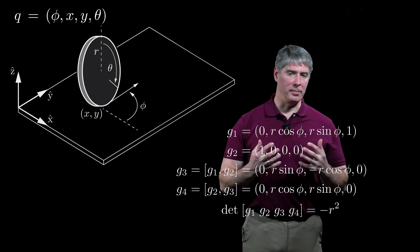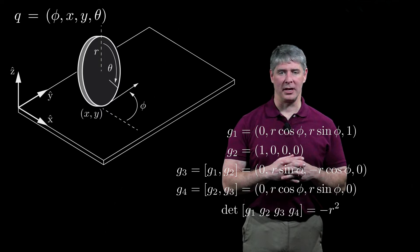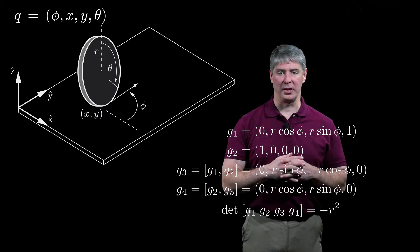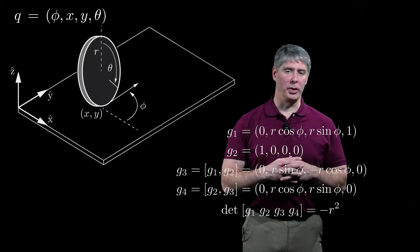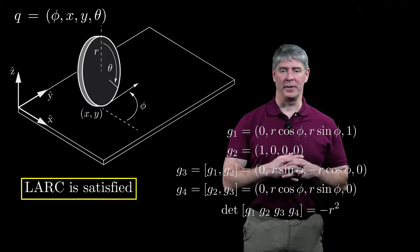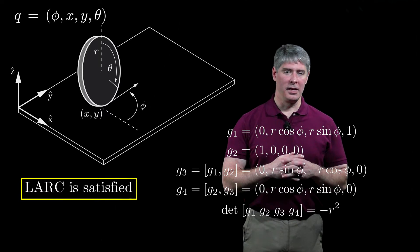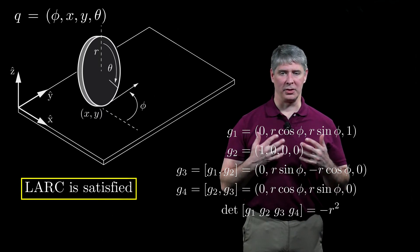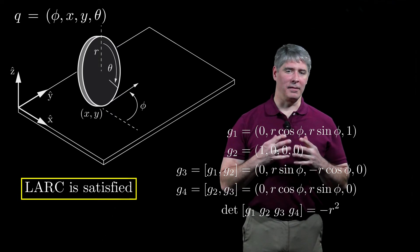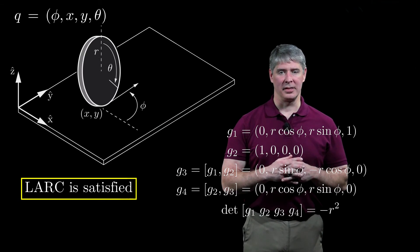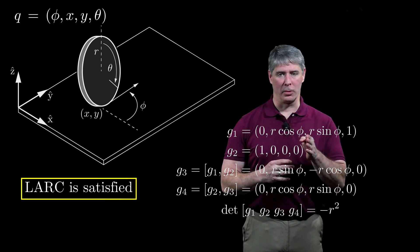Taking the determinant of the 4x4 matrix with these vector fields as the columns, we find that the determinant is minus r squared, so the four vector fields are linearly independent, provided the wheel radius is non-zero. Therefore the LARC is satisfied at all configurations. If the control set positively spans the control space, the robot is small-time locally controllable from all configurations, meaning that it can follow any path in its four-dimensional configuration space arbitrarily closely, despite the two velocity constraints that the wheel cannot slide forward or sideways.